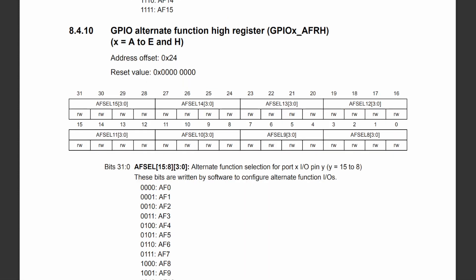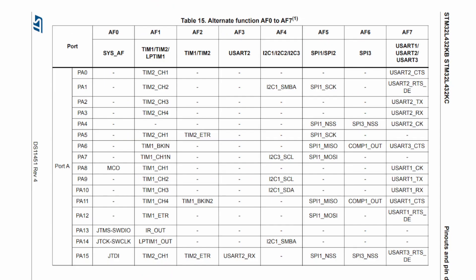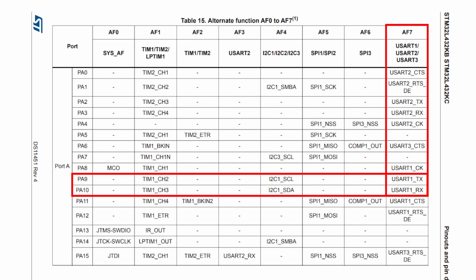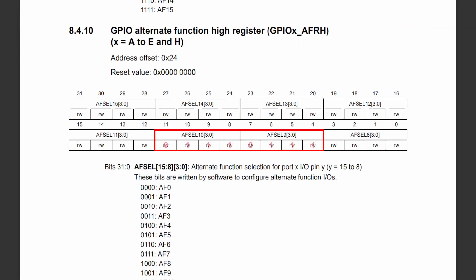To set the alternate function of the pins I need to refer to the GPIO alternate function registers. Since I am configuring pins 9 and 10 I only need to access the GPIO alternate function high register as it contains bits to configure the alternate function of pins 8 to 15. Bits 4 to 11 configure the alternate function of pins 9 and 10. The datasheet specifies that alternate function 7 represents UART1, with pin PA9 being the transmitter pin and pin PA10 being the receiver pin. Therefore writing a value of 7 in the respective positions will set the function of the pins to UART1.